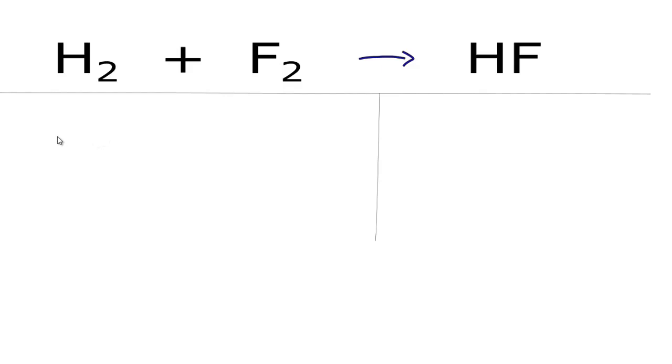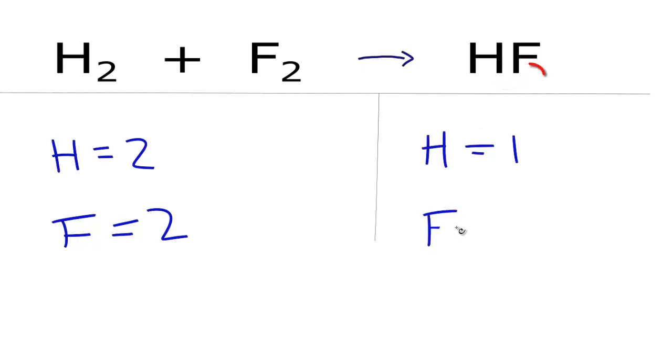On the reactant side, we have two hydrogens, and fluorines, we have two. On the product side, we have one hydrogen. It's not written, but we assume there to be a one after this. And we have one fluorine.